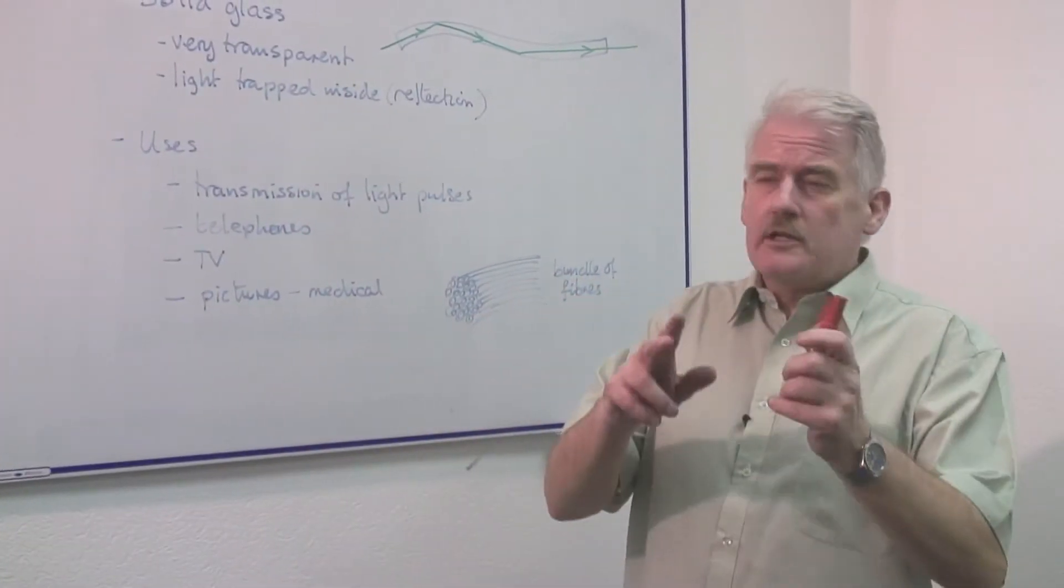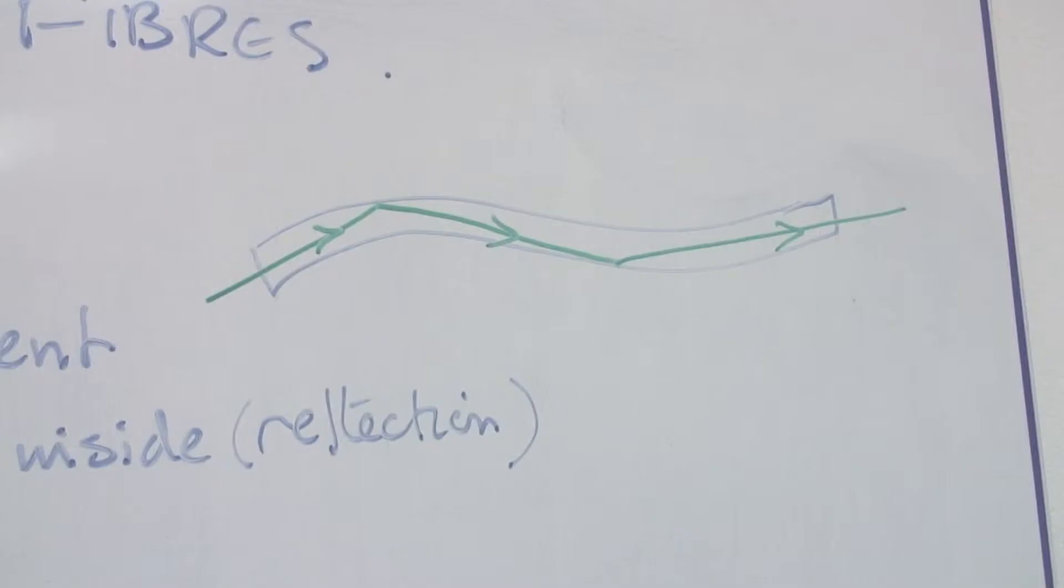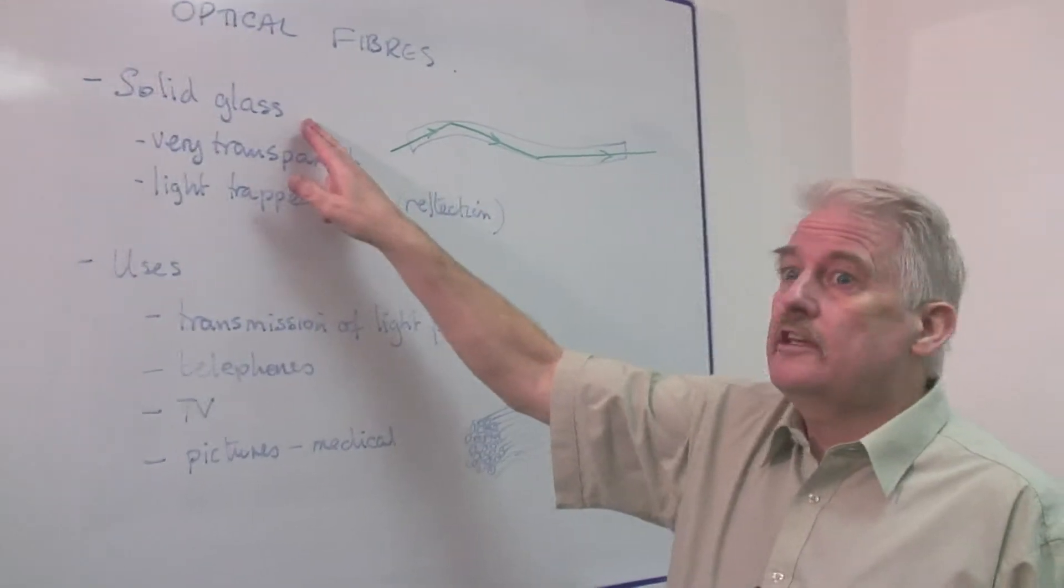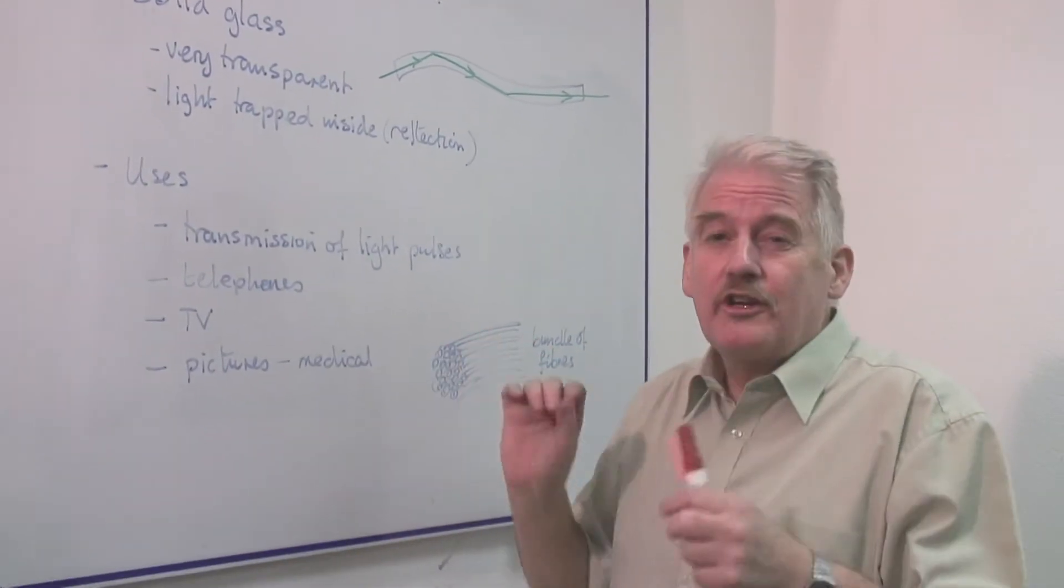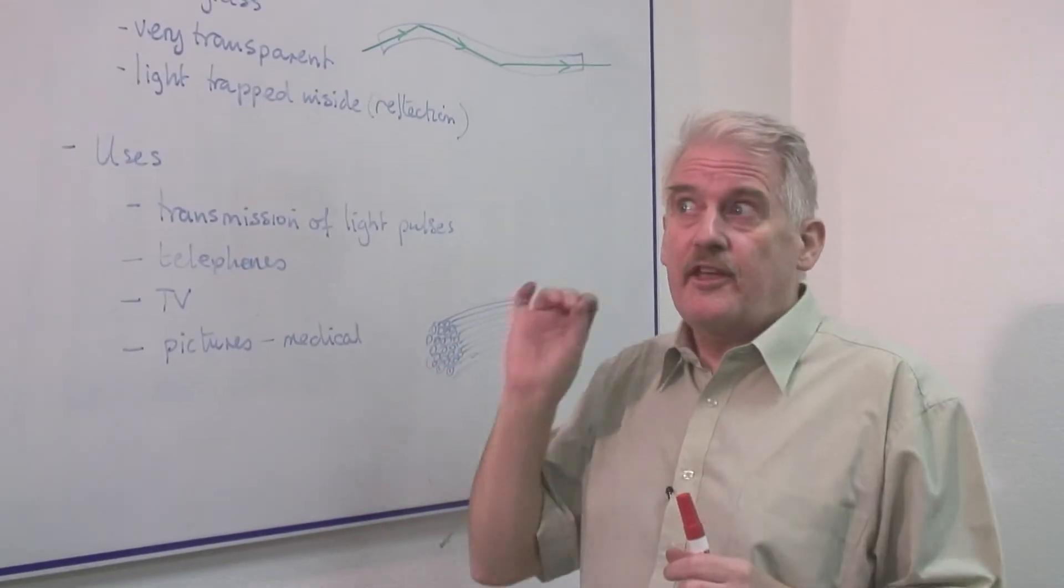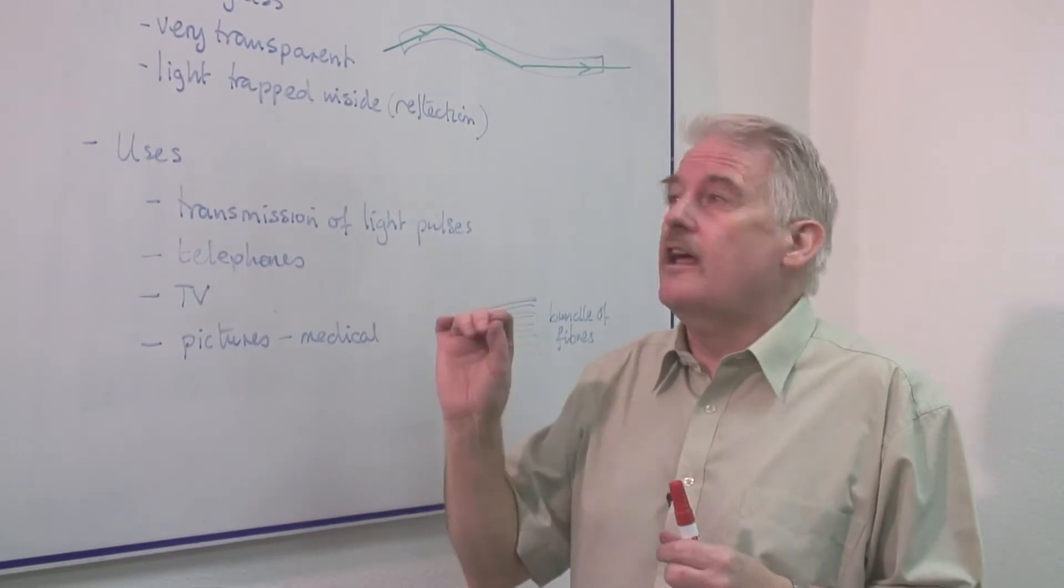Hi, I'm Steve Jones and I'm going to explain what optical fibres are. First of all, they are actually solid glass. People imagine when you see drawings you think they're tubes, but they are not, they are solid glass.